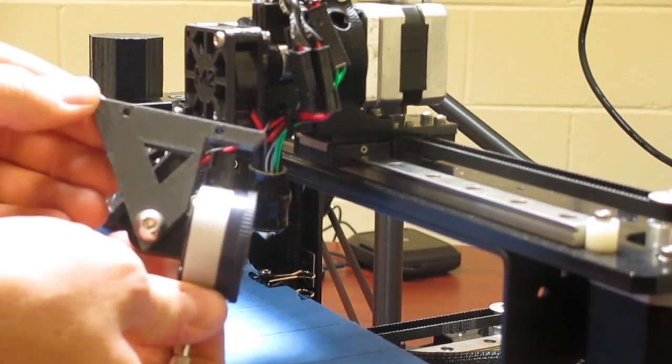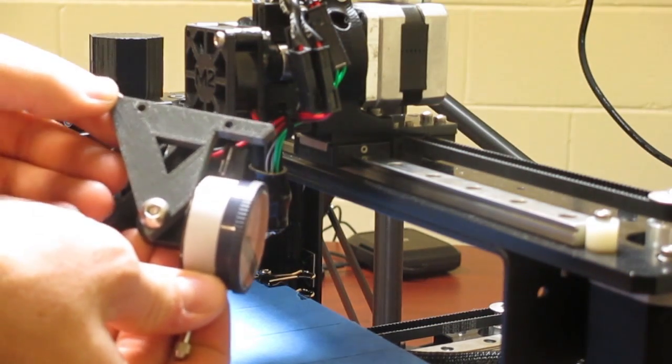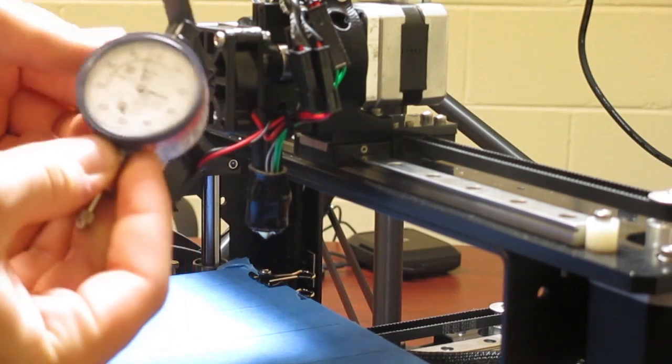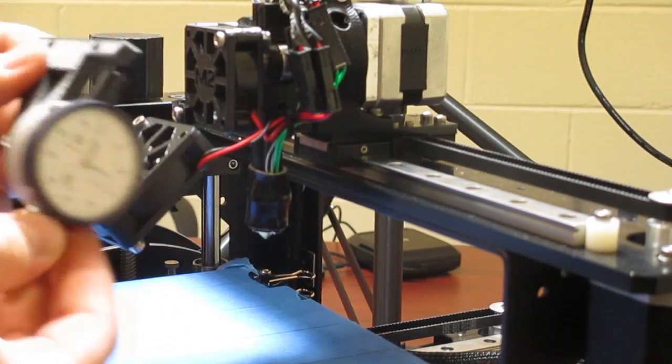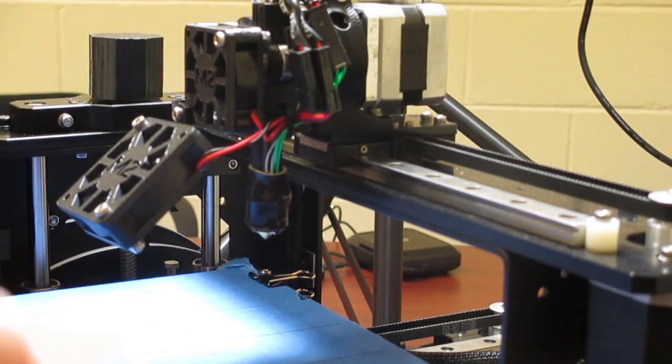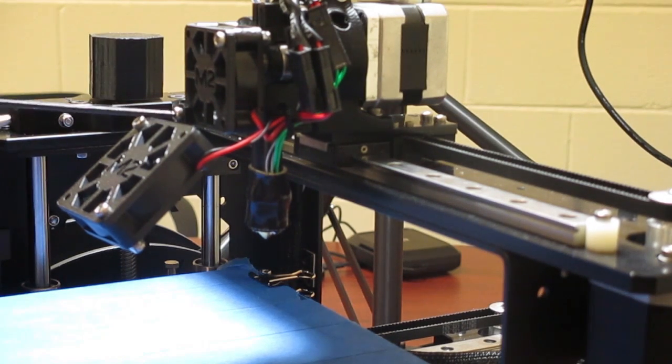The dial indicator mount we created, the link is in the description for Thingiverse, will hold a Mitutoyo dial indicator. It's going to mount right here on this fan. So first you have to start by taking the fan off, taking the large fan off.